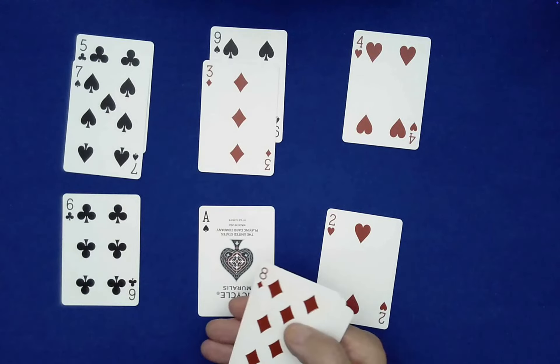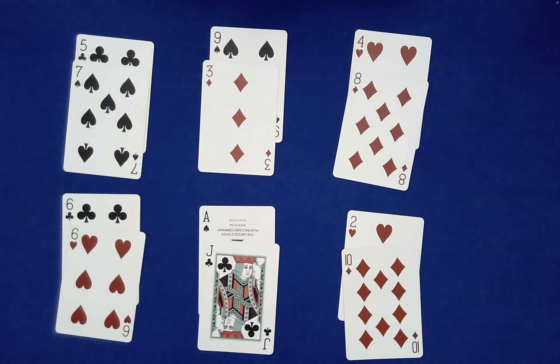9 and 3 add to 12, 4 and 8 add to 12, 6 and 6 is 12, Ace and 11 or Jack is 12, 2 and 10 is 12. Okay, so you can use what I've shown you here in so many different ways, and there's countless variations that you can come up with if you would like in terms of what these special pairings are.